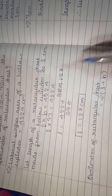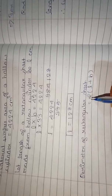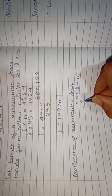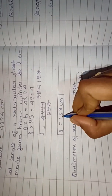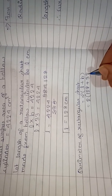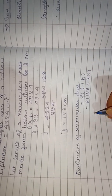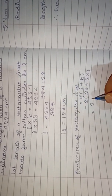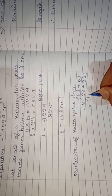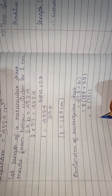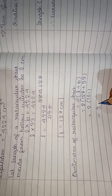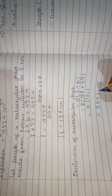Now what is asked is the perimeter of the rectangular sheet. The formula is 2 times (length + breadth). So: 2 × (128 + 33) = 2 × 161 = 322 centimeters.